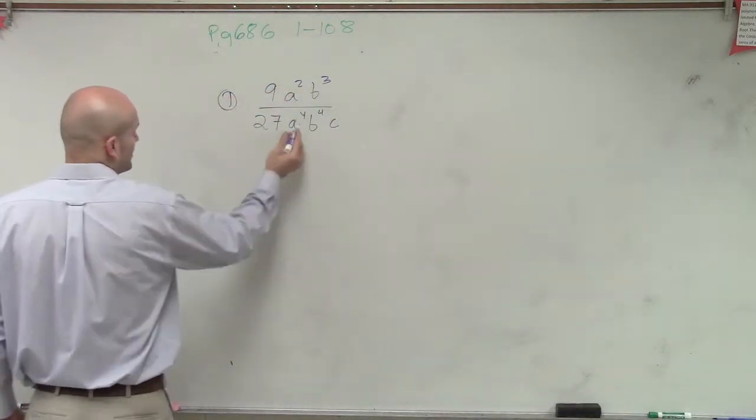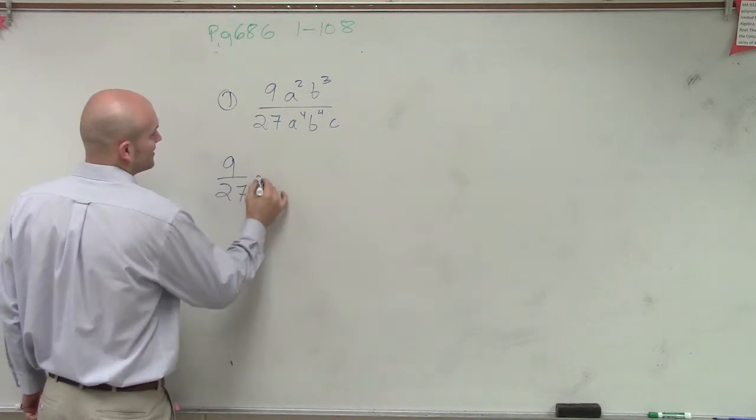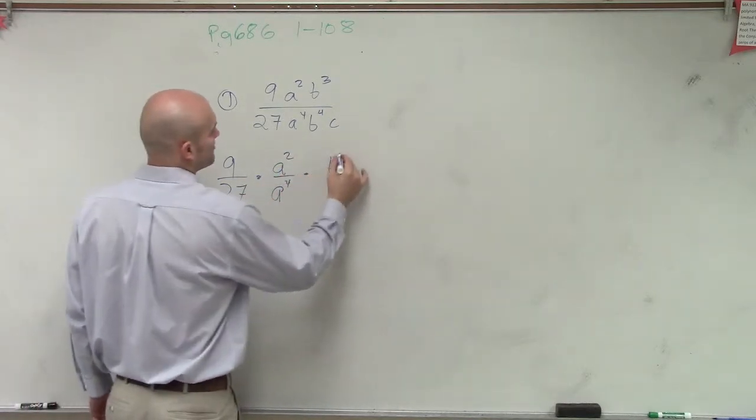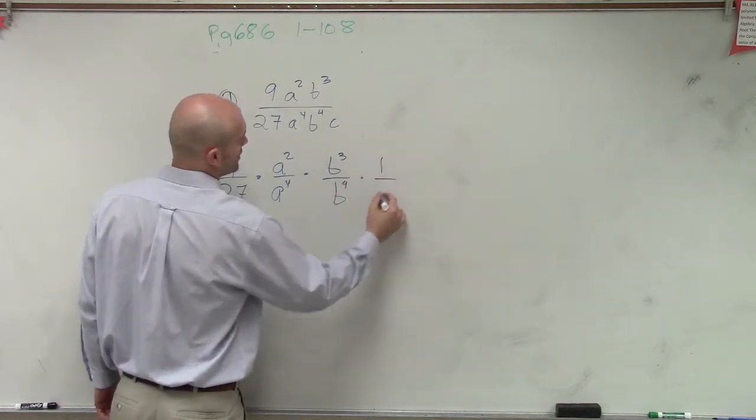So what we can do is break this up as 9 over 27 times a squared over a to the fourth times b cubed over b to the fourth times 1 over c.